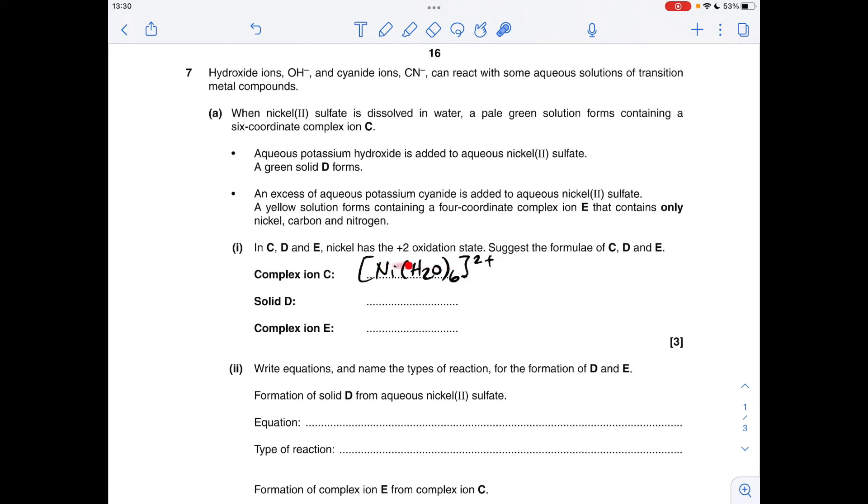Solid D: aqueous potassium hydroxide is added to nickel(II) sulfate, so it's effectively been added to this and we get solid D. Two options, but both are called nickel(II) hydroxide, so you can either give the simplified formula or you can give the full formula.